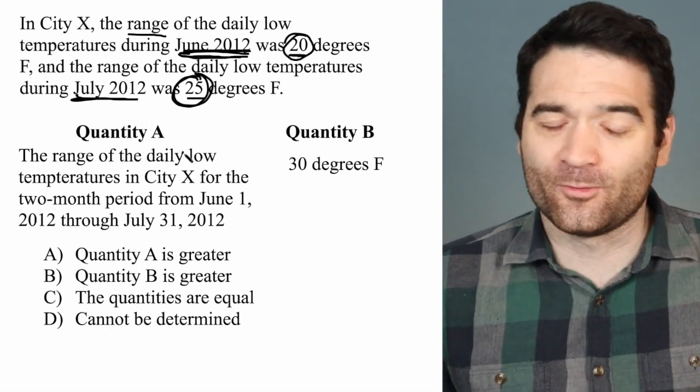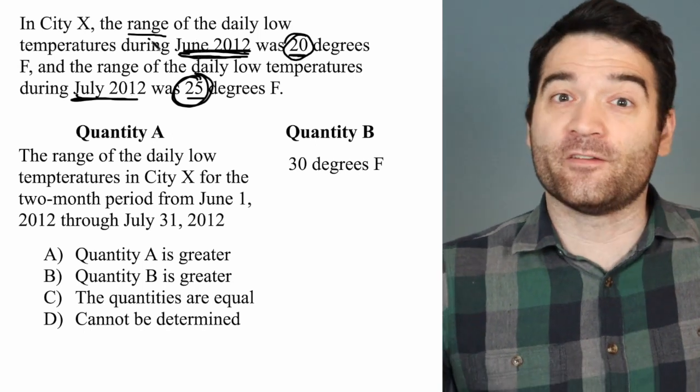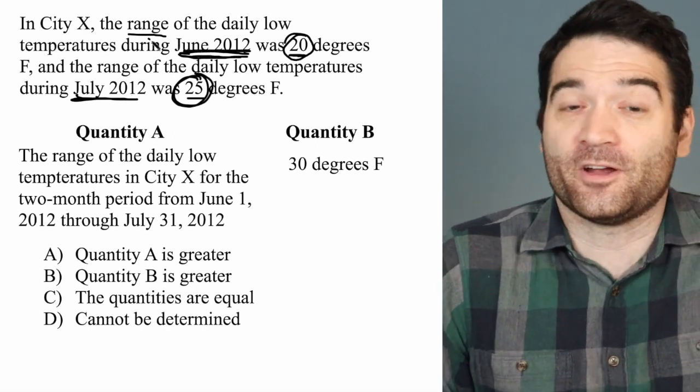Well, there's no way for us to know. Because as I just said, it could well be that June and July are very far apart, or it could well be that they're very close together.